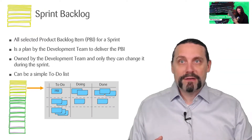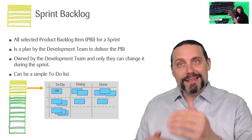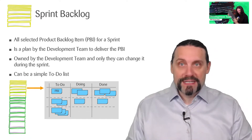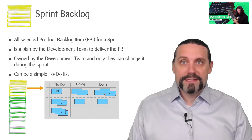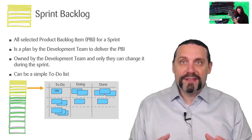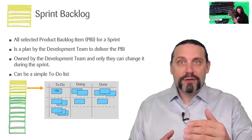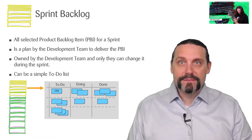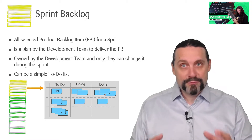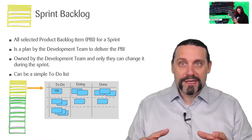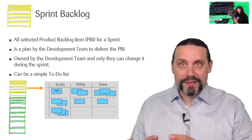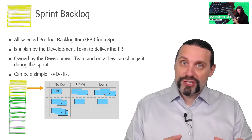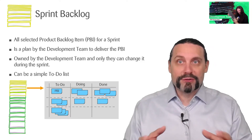A sprint backlog is just a selection of product backlog items which are going into a sprint. This sprint backlog is nothing else than a plan of the development team to deliver these product backlog items. The sprint backlog is completely owned by the development team, and only the development team can change the sprint backlog during a sprint.